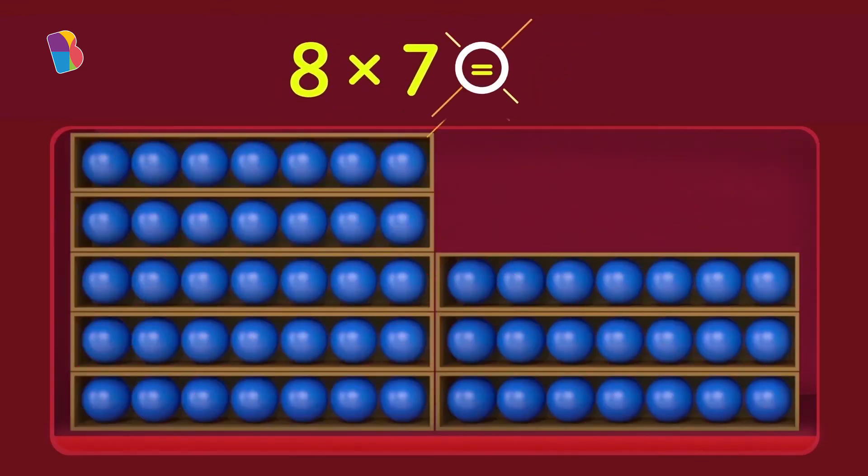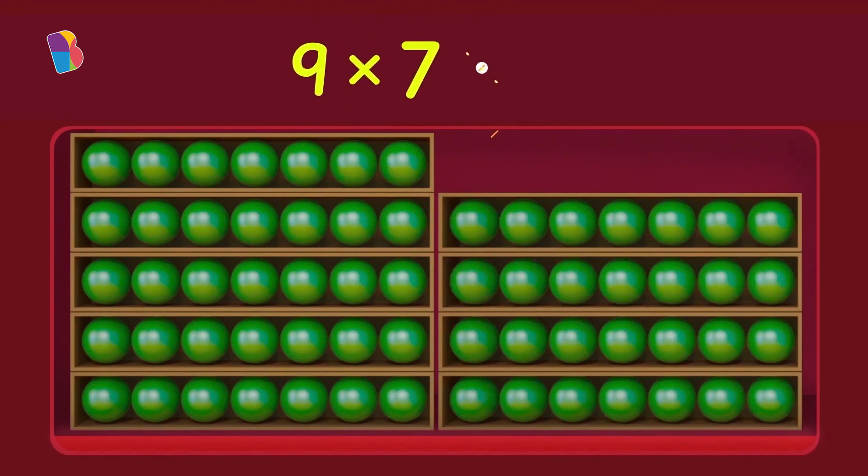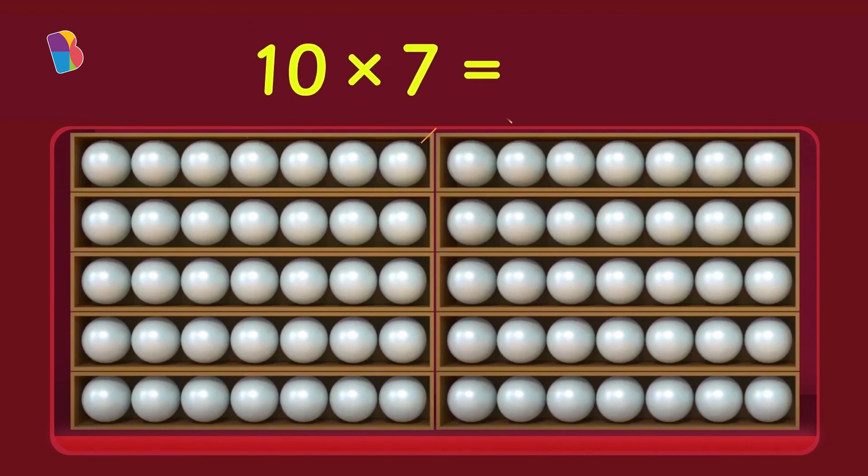Eight times seven equals fifty-six. Nine times seven equals sixty-three. Ten times seven equals seventy.